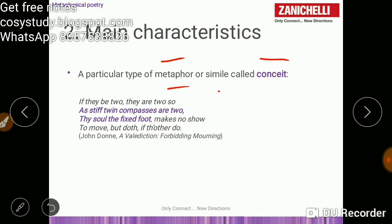Let's go ahead. Here is an example of conceit, and this one is most important example from A Valediction Forbidding Mourning by John Donne. Here two lovers are compared to stiff twin compasses. 'If they be two, they are two so as stiff twin compasses are two. Thy soul the fixed foot, make no show to move, but does if the other do.'